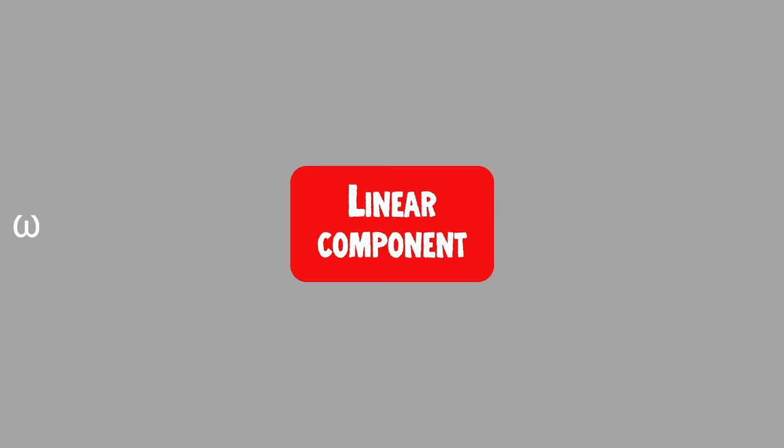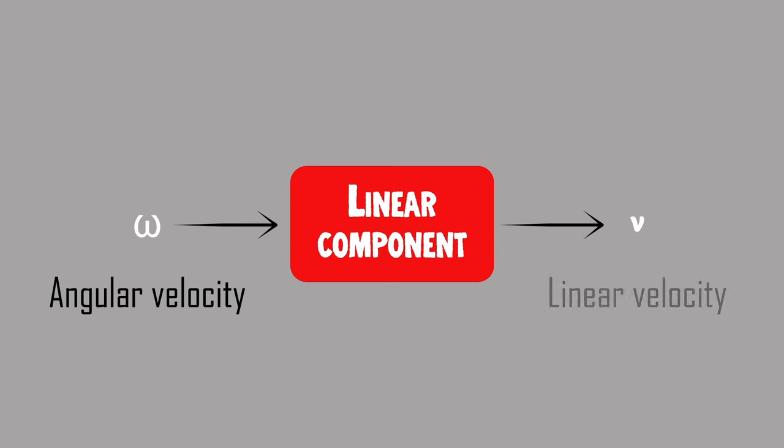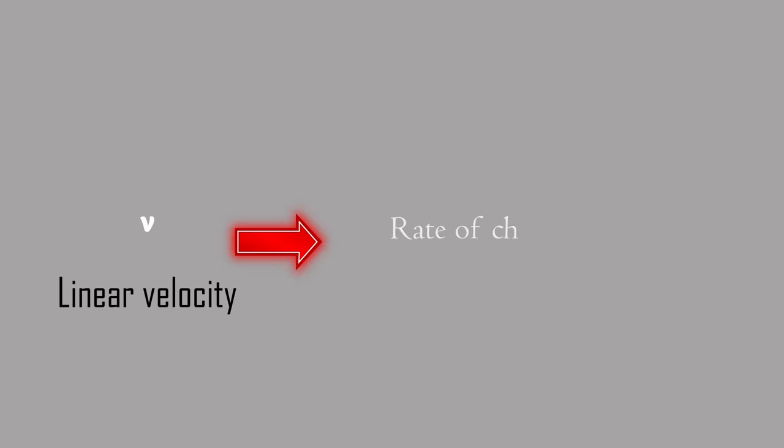The linear component of angular velocity is known as linear velocity, which is the rate of change of an object's linear displacement. We realize that the velocity is the product of the object's angular velocity and the radius of the circle it traces.